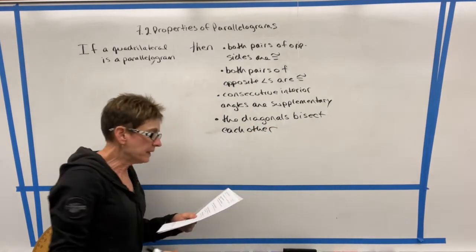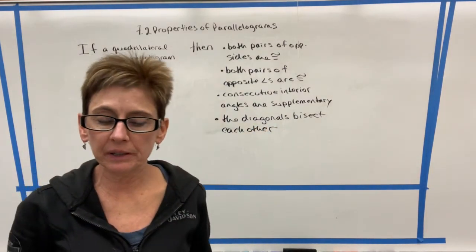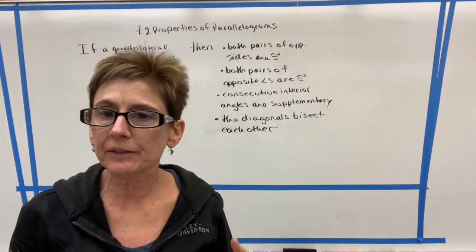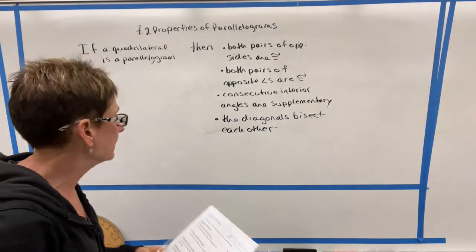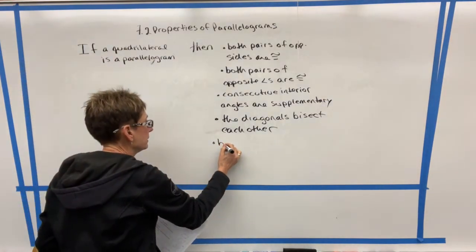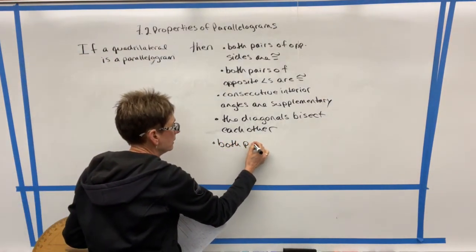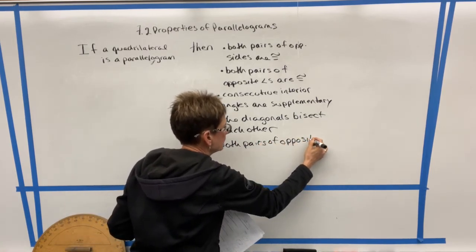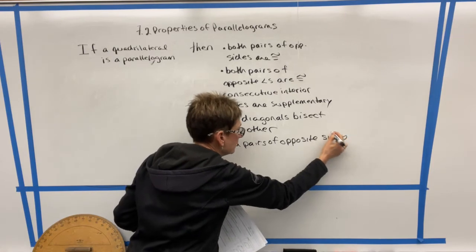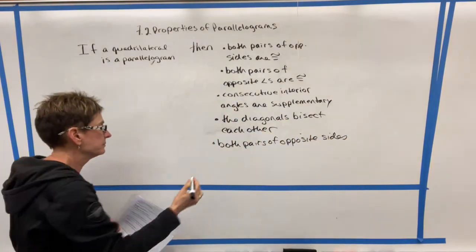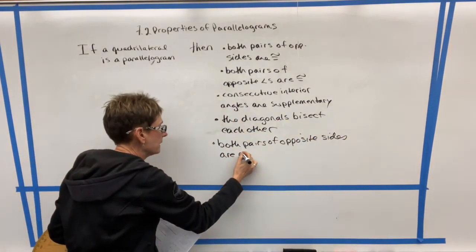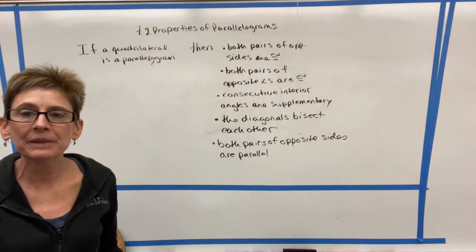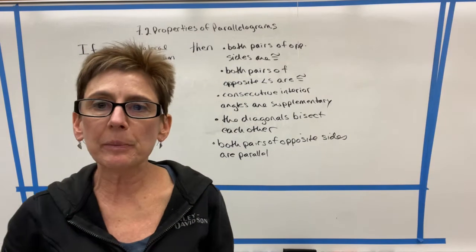Another thing that is true about a parallelogram is the diagonals bisect each other. Now, one thing we haven't yet mentioned that is considered really just the definition of a parallelogram versus, say, just a property is that both pairs of opposite sides are parallel.